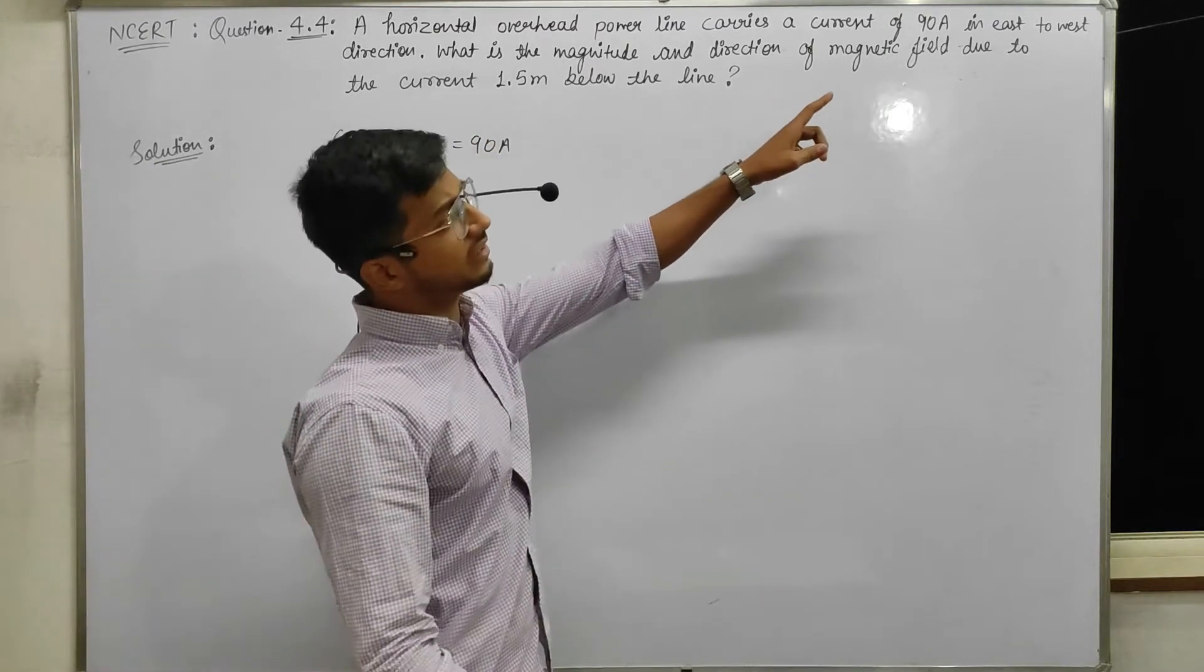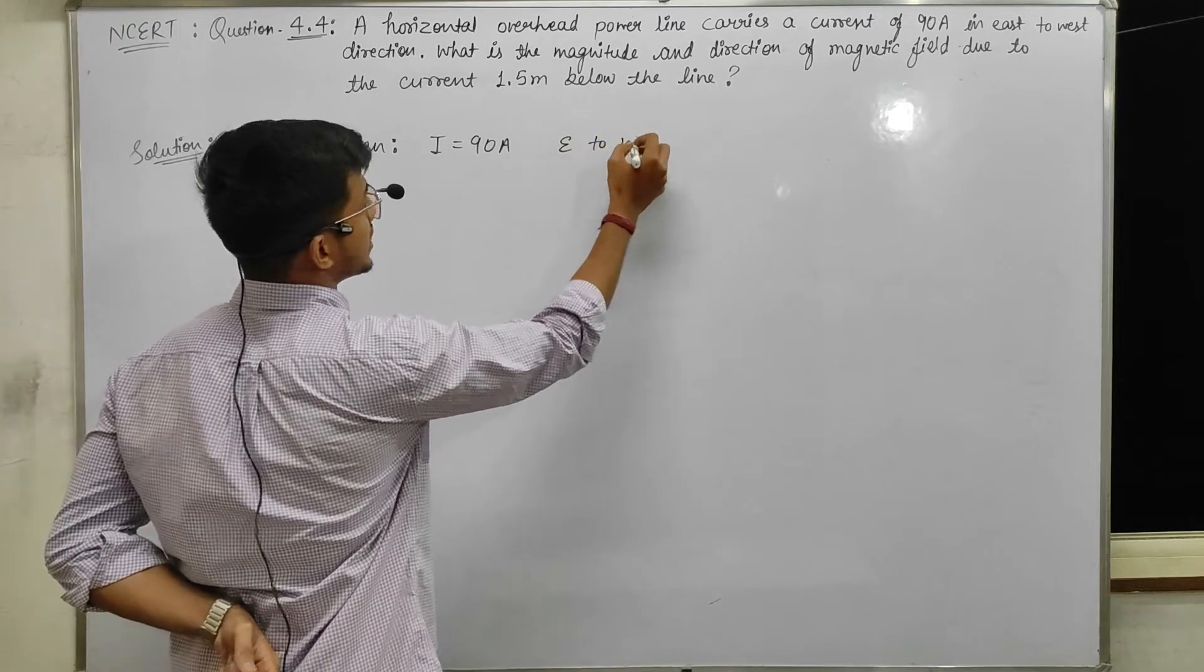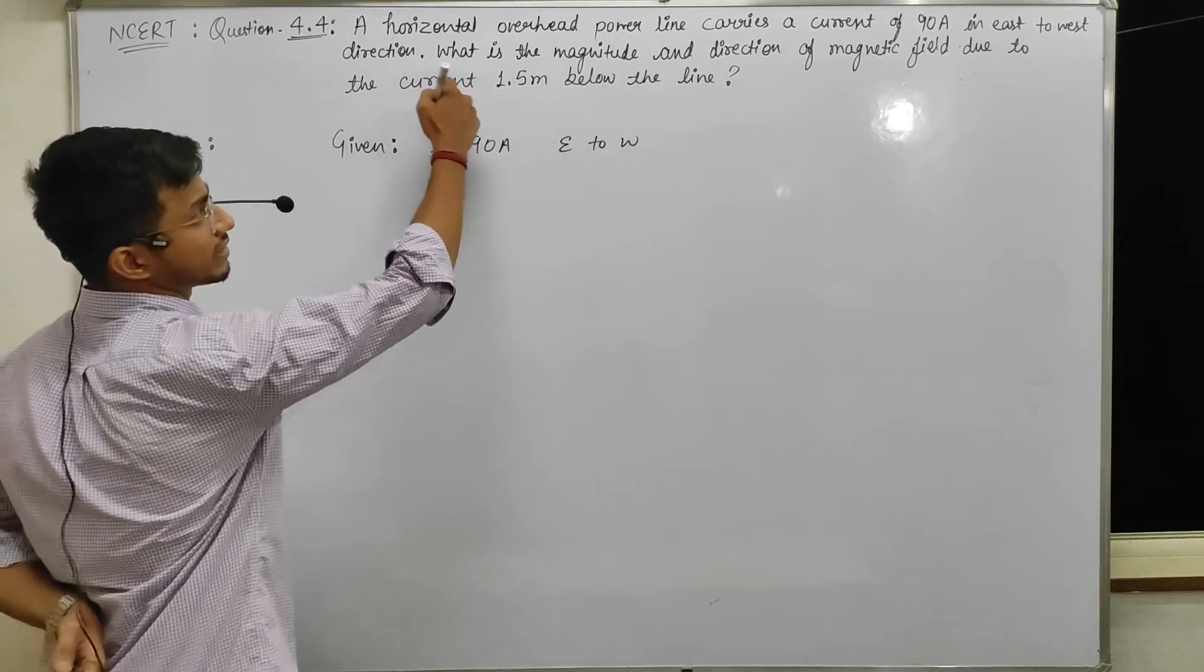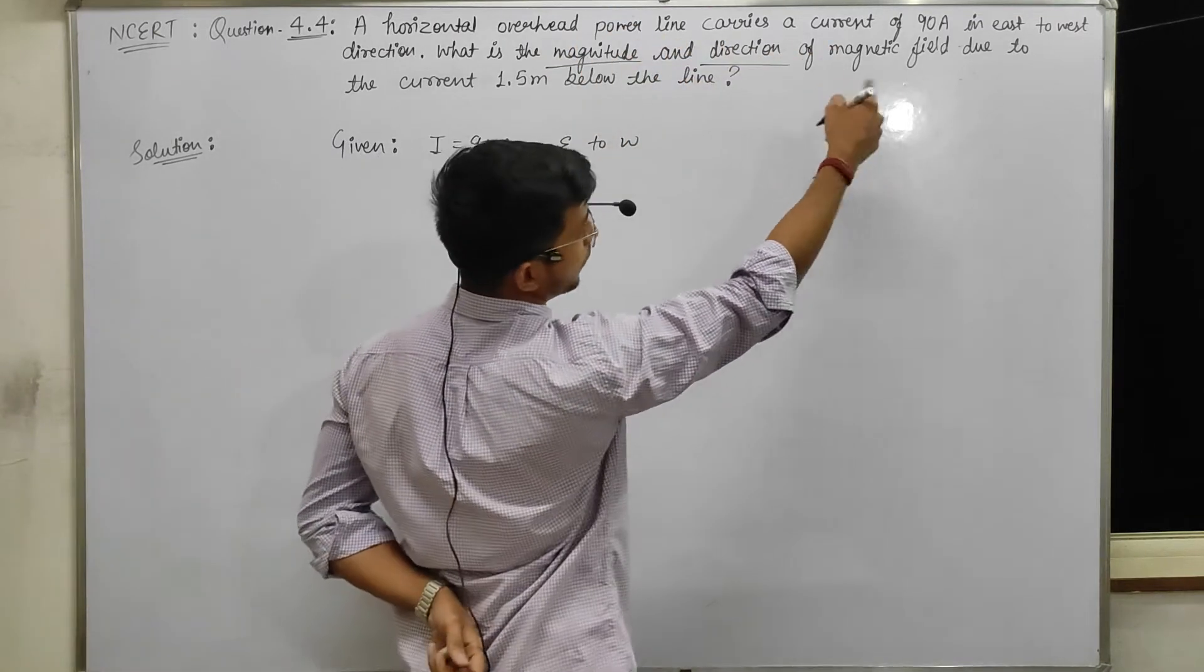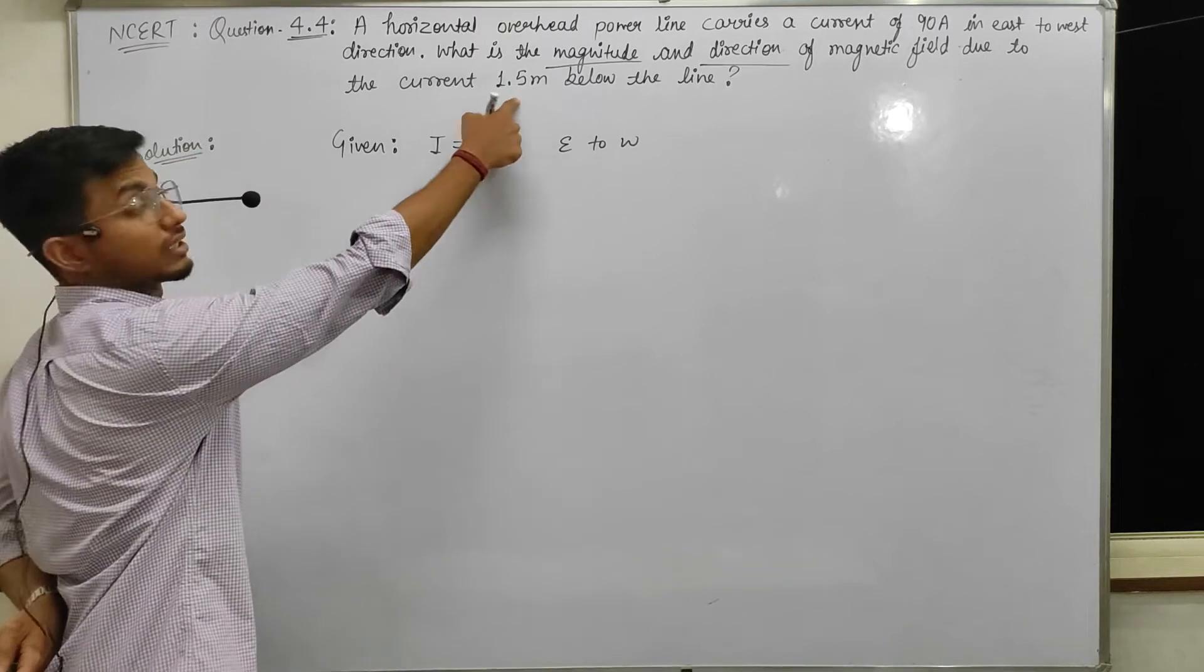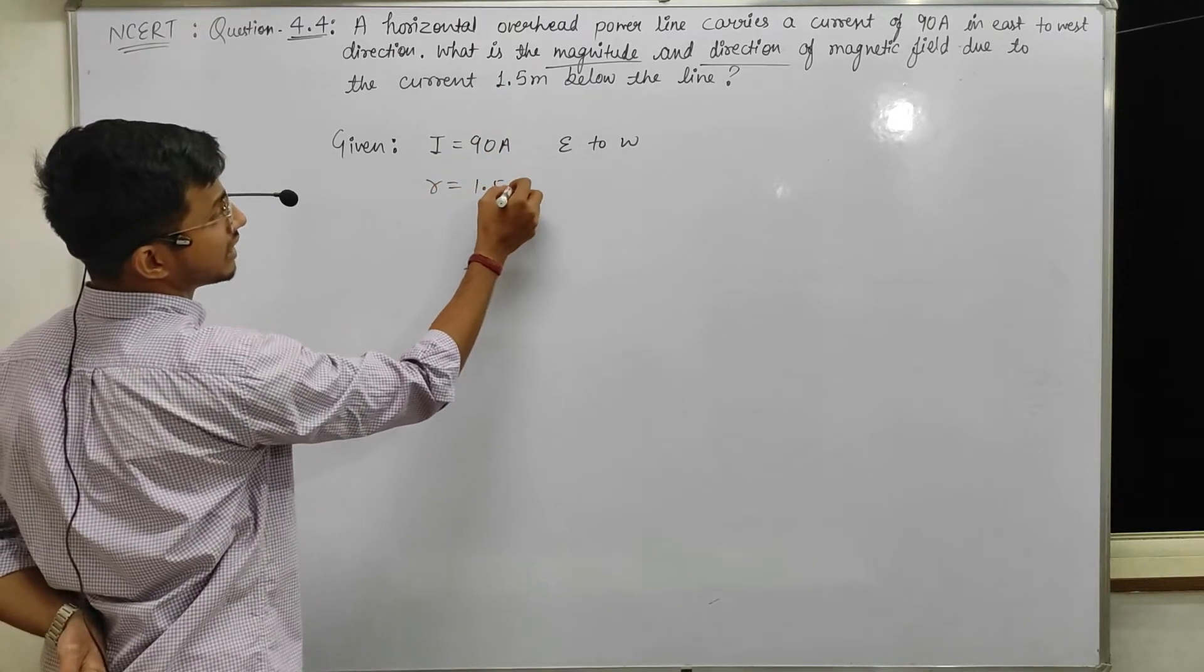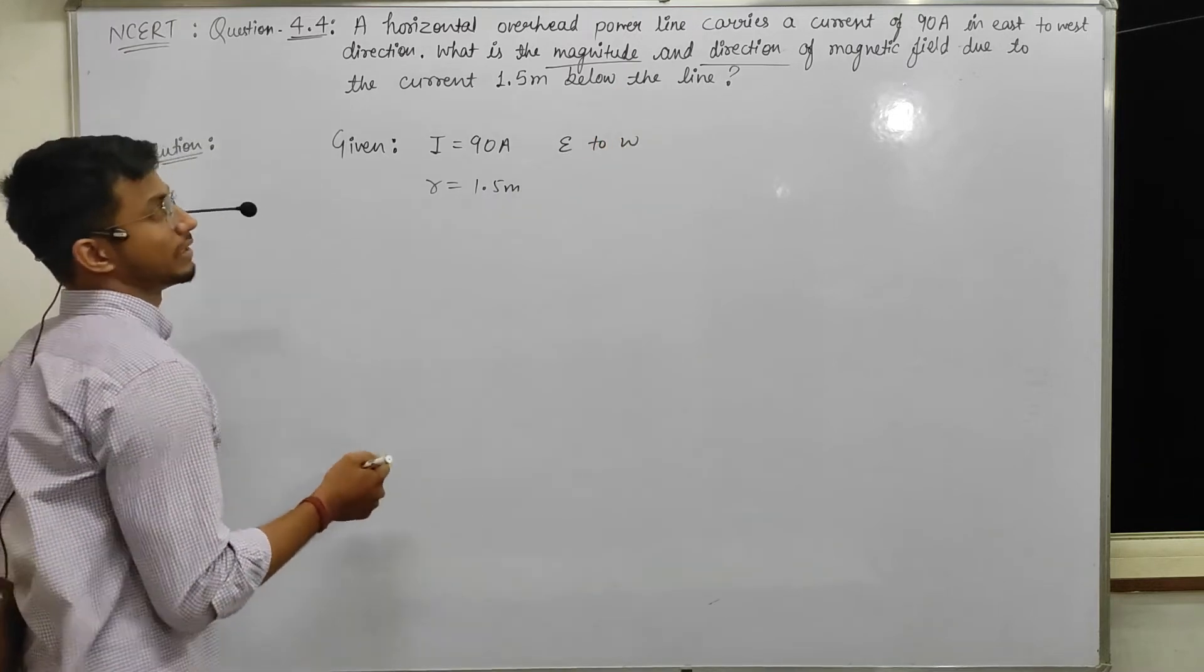The current is east to west direction, I am writing E2W. What is the magnitude and direction of magnetic field due to the current at 1.5 meter below the wire?